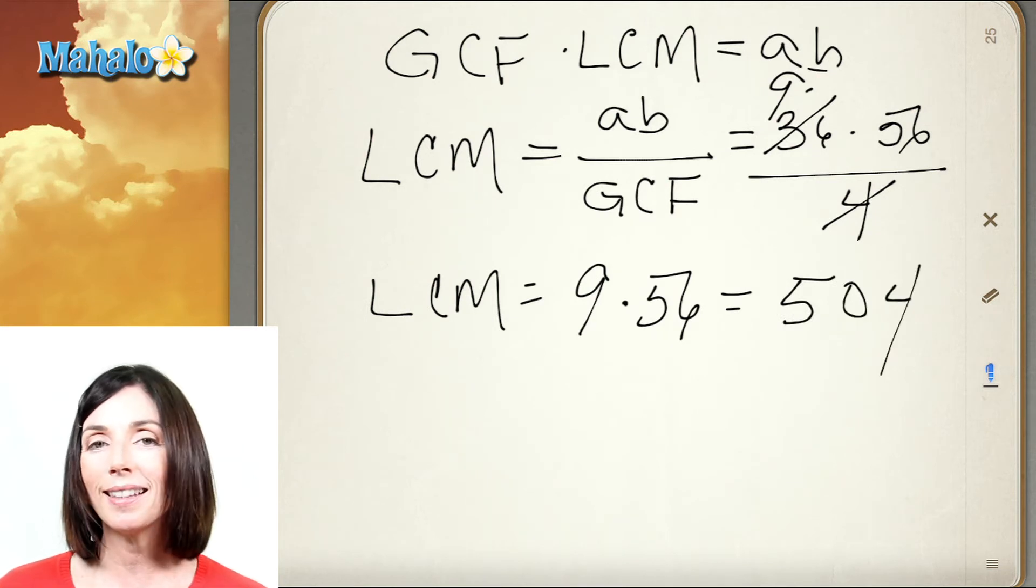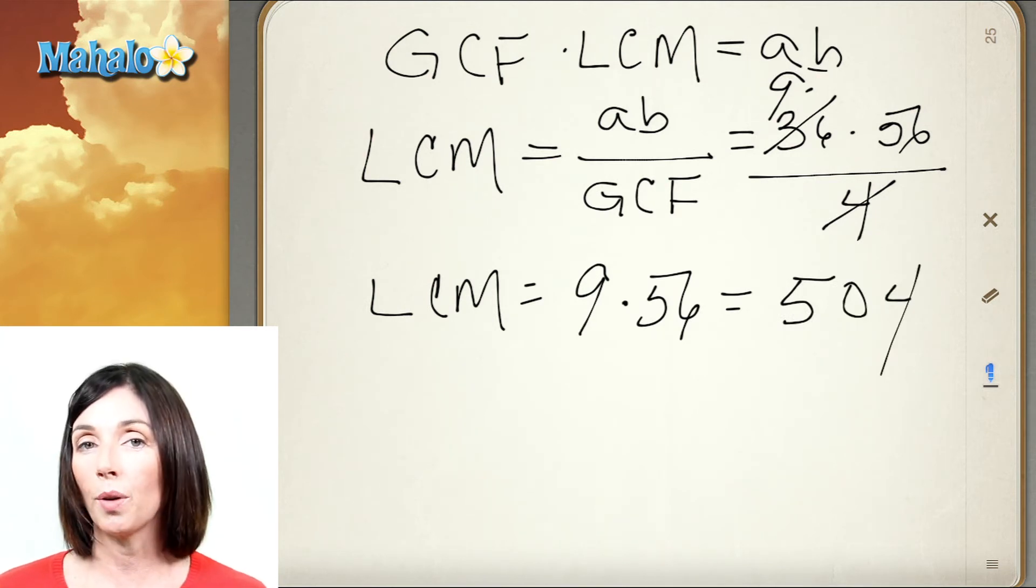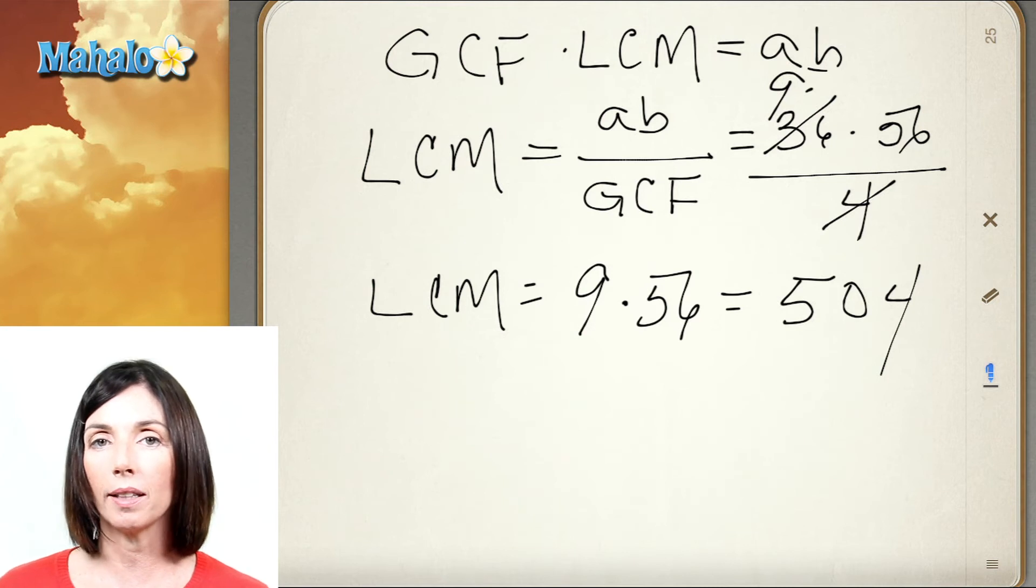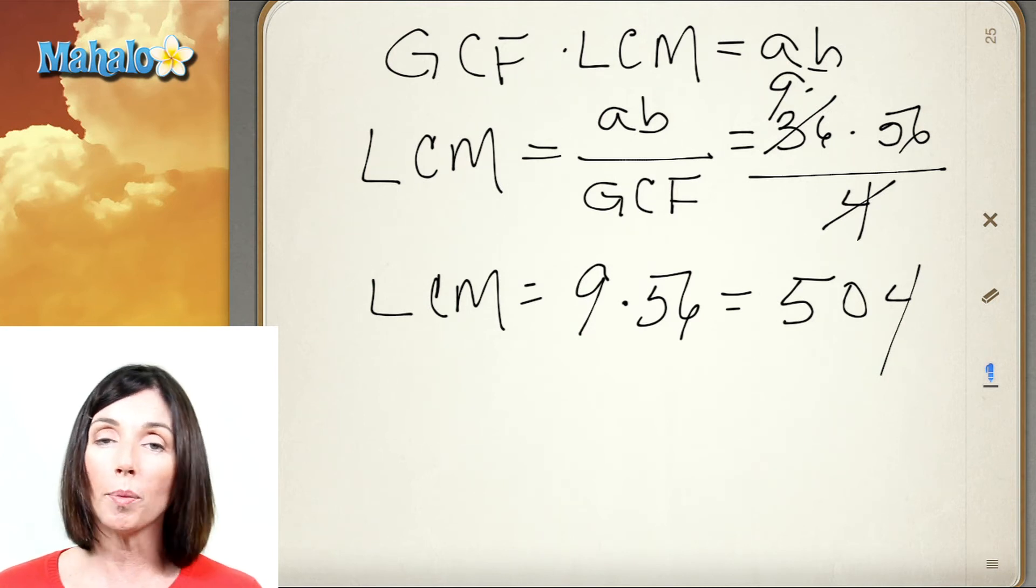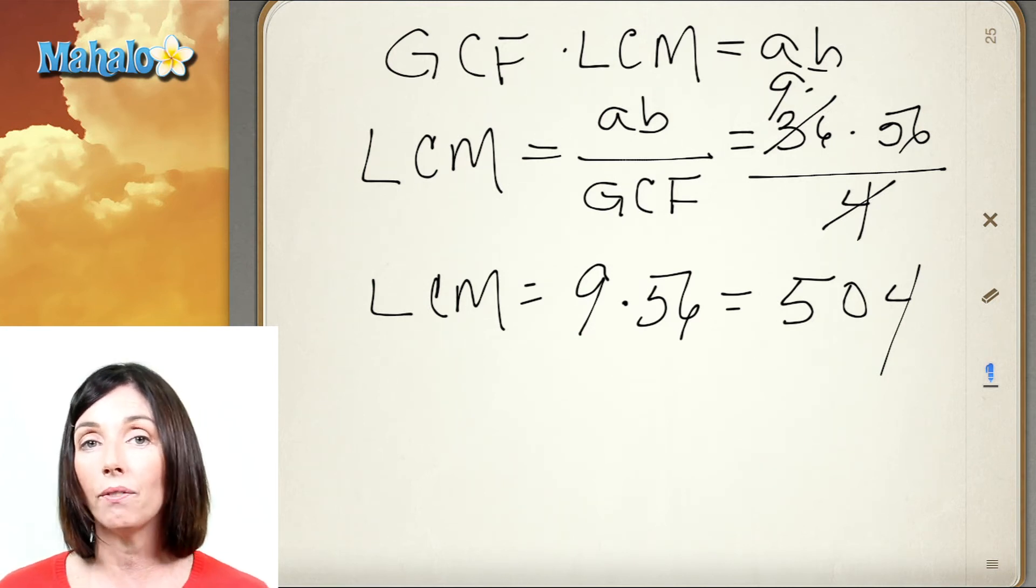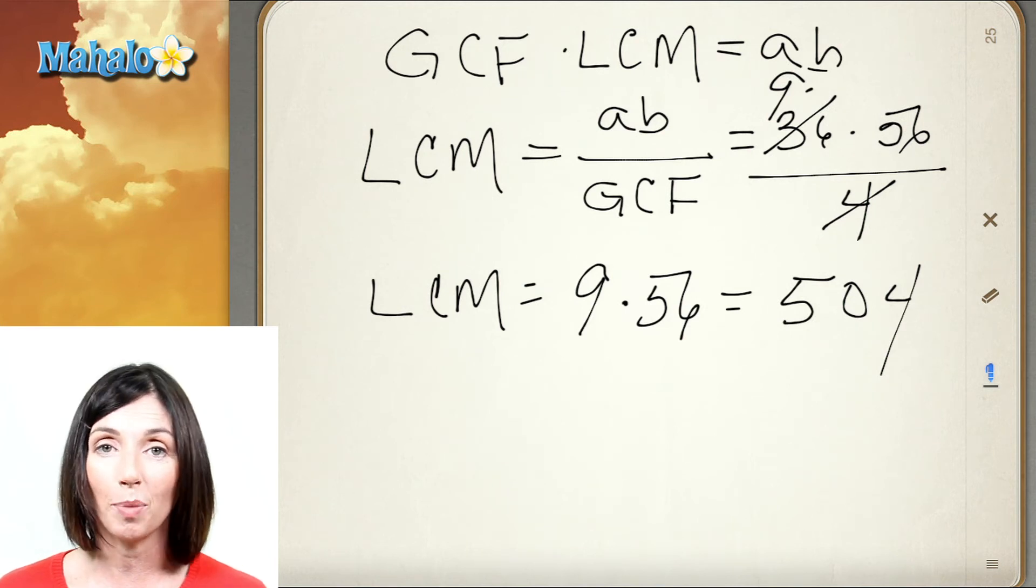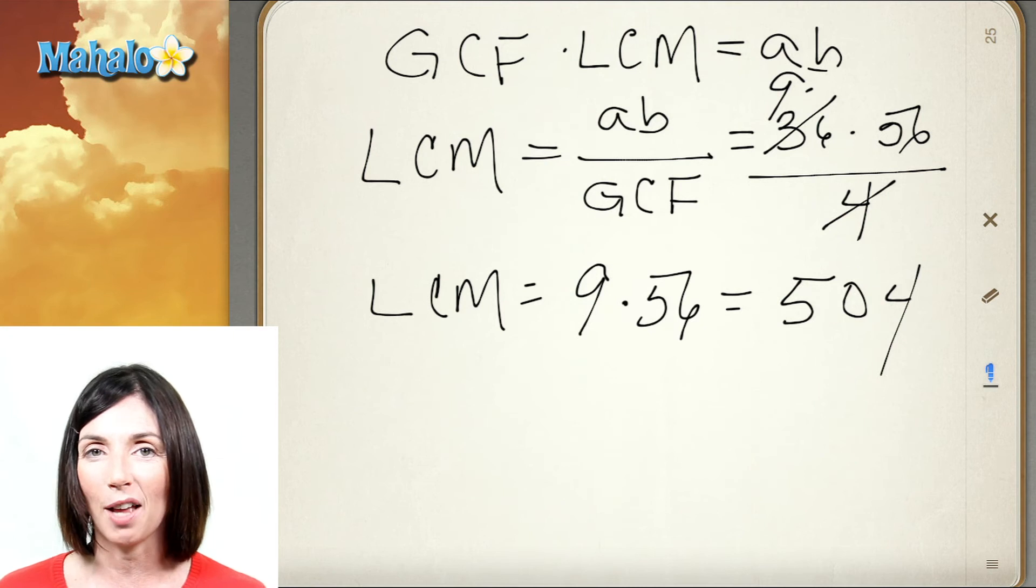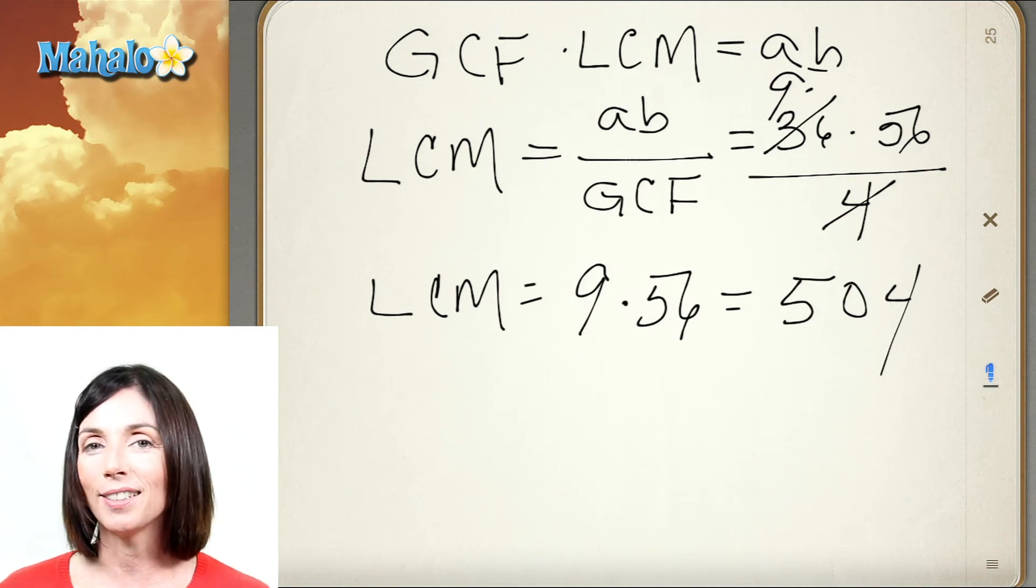So by using this theorem, I was able to find the greatest common factor, which was a small number, 4, and then divide that into the product of the two numbers, and that gives me the least common multiple, which is probably a little easier than having to go about finding the least common multiple since it's a bigger number. So that's how this theorem can be really useful when you're doing this kind of problem. Give it a try. I think you'll like it.